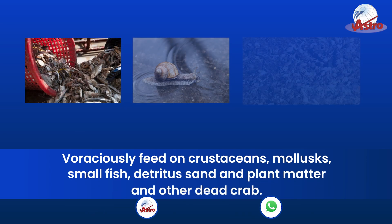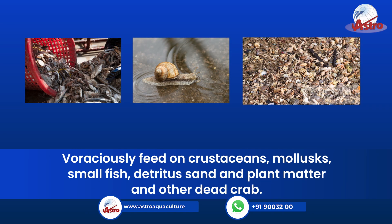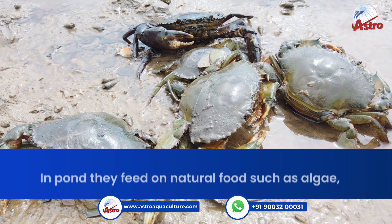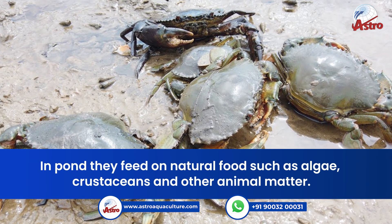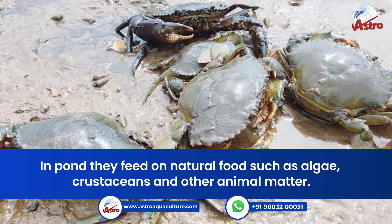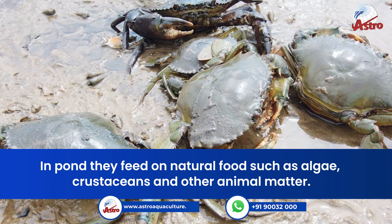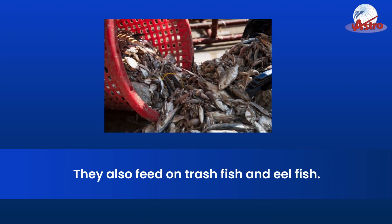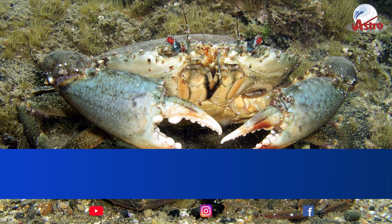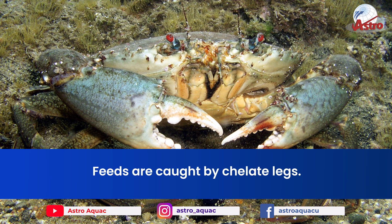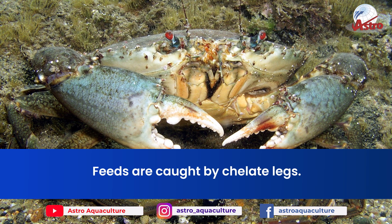Mud crabs are omnivorous and nocturnal feeders. They voraciously feed on crustaceans, mollusks, small fish, detritus, sand and plant matter, and other dead crabs. In ponds, they feed on natural food such as algae, crustaceans, and other animal matter. They also feed on trash fish and eel fish. Feeds are caught by chelate legs.